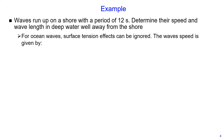Let's solve an example. We have waves that run on a shoreline with a period of 12 seconds. We need to determine their speed and the wavelength in deep water, well away from the shoreline. We know that for ocean waves, effects of surface tension can be neglected.